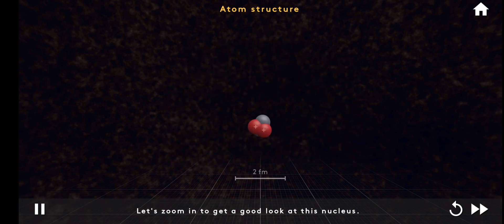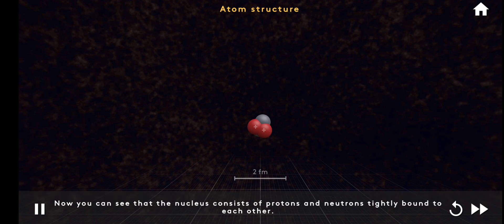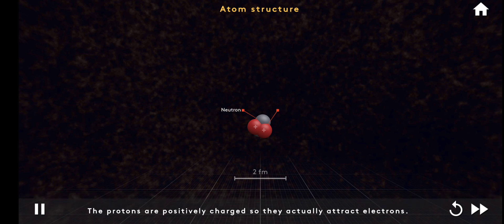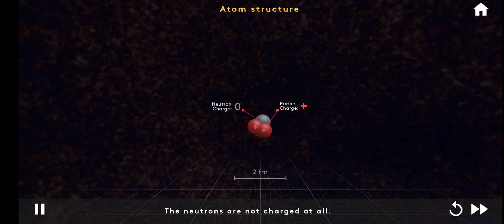Let's zoom in to get a good look at this nucleus. Now you can see that the nucleus consists of protons and neutrons, tightly bound to each other. The protons are positively charged, so they actually attract electrons. The neutrons are not charged at all.